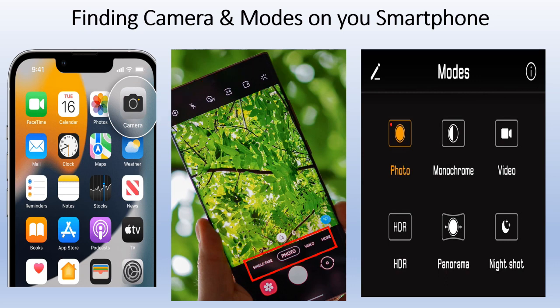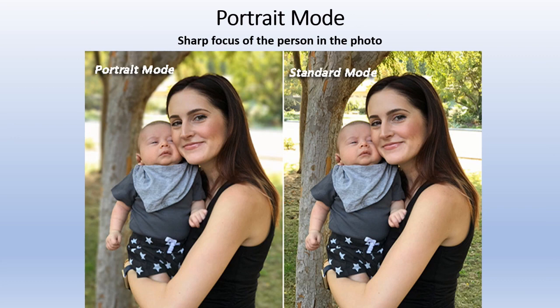Some cameras may just have a button that says Modes, and it will open up a similar screen. The first mode is Portrait Mode. A standard photo shows everything nice and clear, but in portrait mode the people are more enhanced and clear while the background comes in a little fuzzy — that's intentional to give it more of a portrait feel.